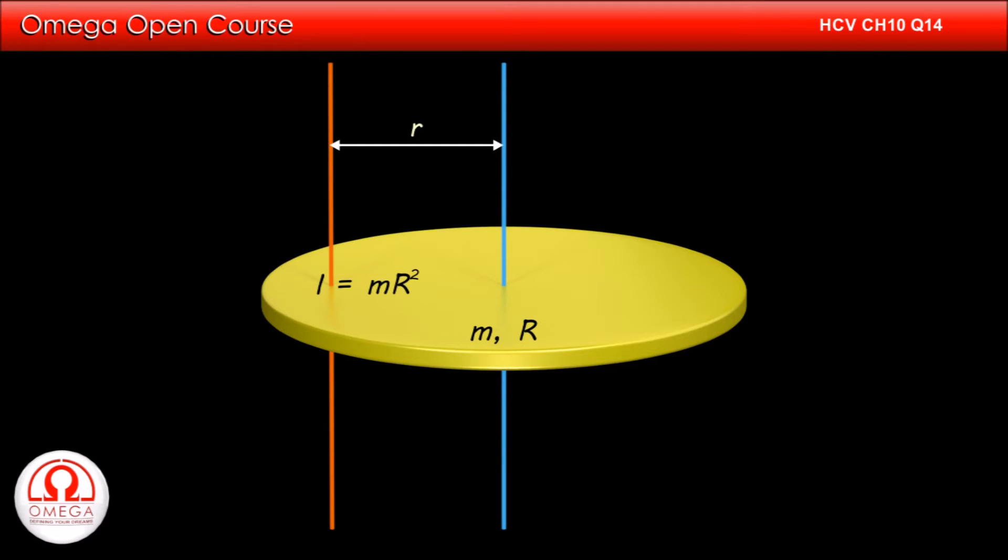The moment of inertia of the disc about the axis perpendicular to the disc and passing through its center is half m into capital R square.